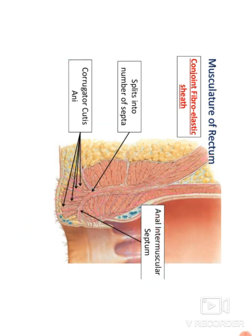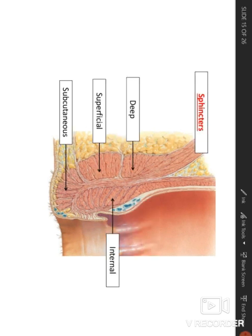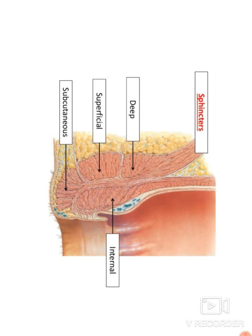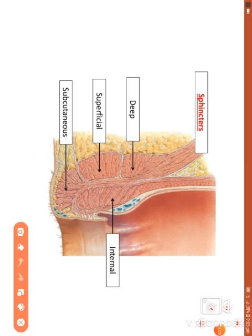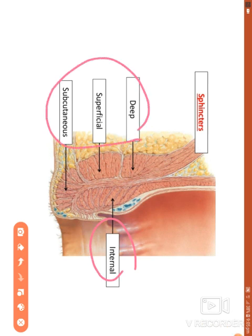In summary, the musculature of the anal canal includes the internal anal sphincter, external anal sphincter, and the conjoint fibroelastic sheath formed by the outer longitudinal muscle and levator ani.